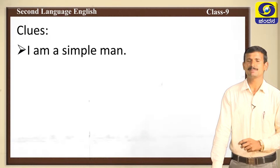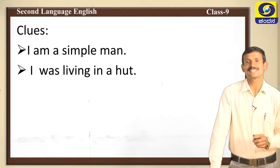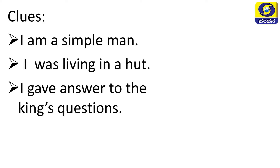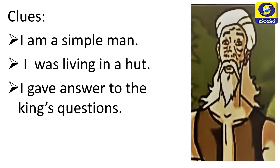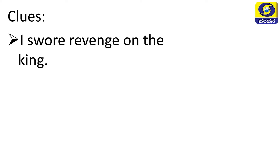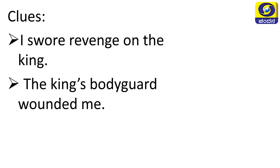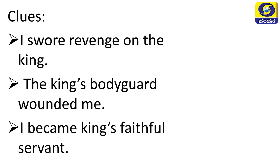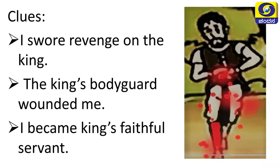Next clues: 'I am a simple man. I was living in a small hut. I gave the answer to the king's questions.' Who is this? Very good — the hermit! Next clues: 'I swore revenge on the king. I wanted to take revenge. The king's bodyguard wounded me. I became the king's faithful servant.' Who is that? Very good — the wounded man, the bearded man!